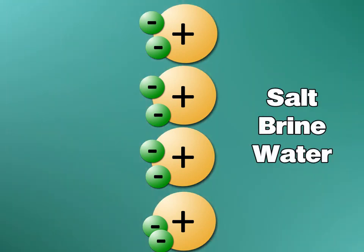This brine water is then circulated in the opposite direction of the normal flow of the water, removing the hardness from the resin.